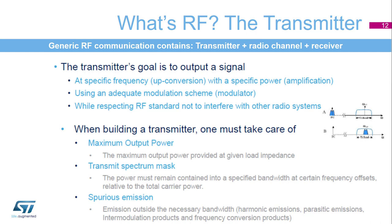When building a transmitter, one must take care of: maximum output power, which is the maximum output power provided at a given load impedance; transmit spectrum mask, where power must remain contained within a specified bandwidth at certain frequency offsets relative to the carrier power; and spurious emissions, which are emissions outside the necessary bandwidth, including harmonic emissions, parasitic emissions, intermodulation products, and frequency conversion products.